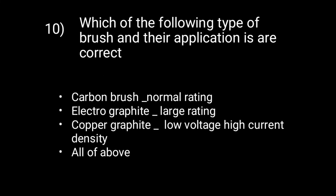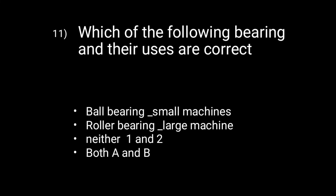Question 10: Which brush type and application is correct? Carbon brush — normal rating; electro-graphite — large rating; copper-graphite — low voltage, high current density; all of the above. Option D is correct. Question 11: Which bearing type and use is correct? Ball bearing for small machines, roller bearing for large machines. Both A and B are correct, so Option D is the answer.